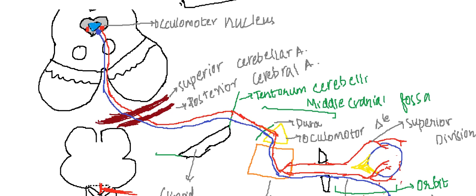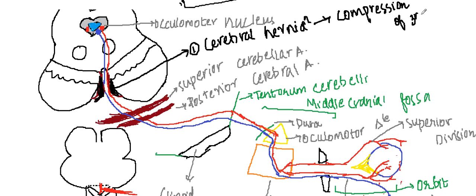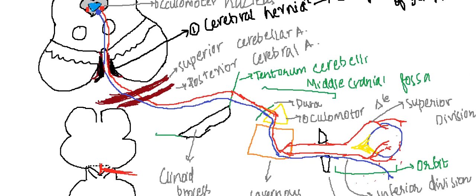If there is herniation of the cerebral peduncles, from above or below, that herniation can lead to compression of the third nerve. So the first cause of unilateral ptosis is cerebral herniation compressing the oculomotor nerve.